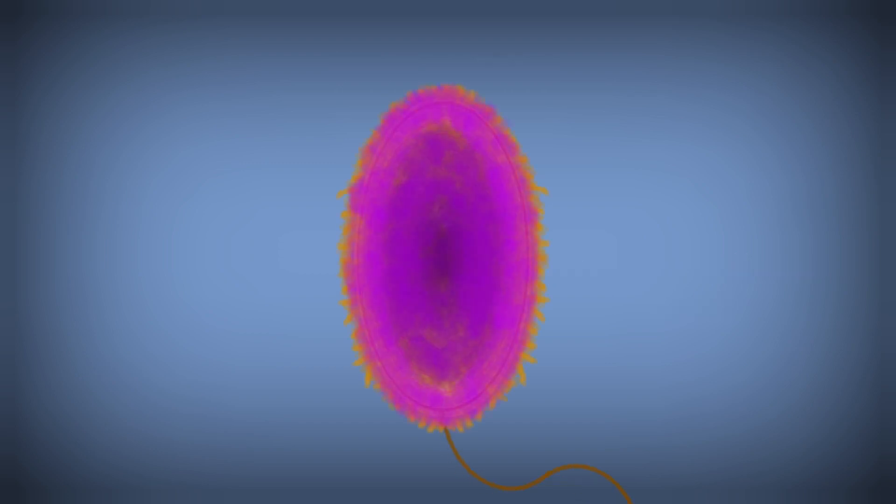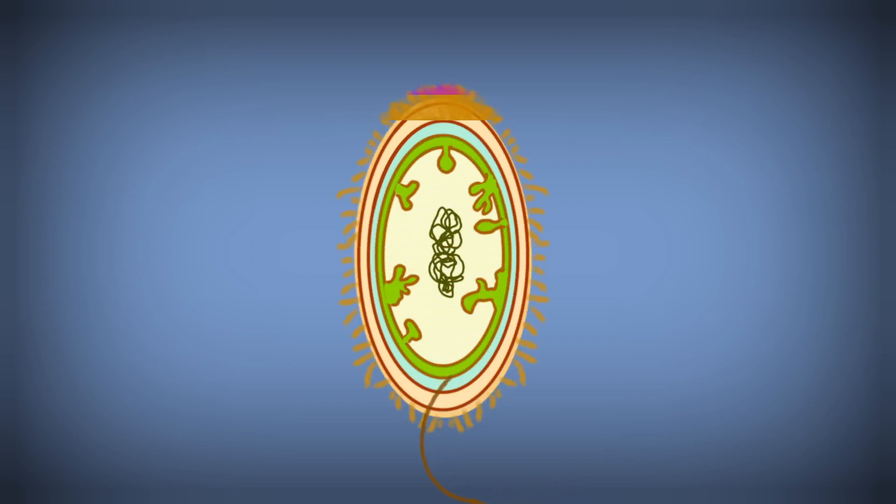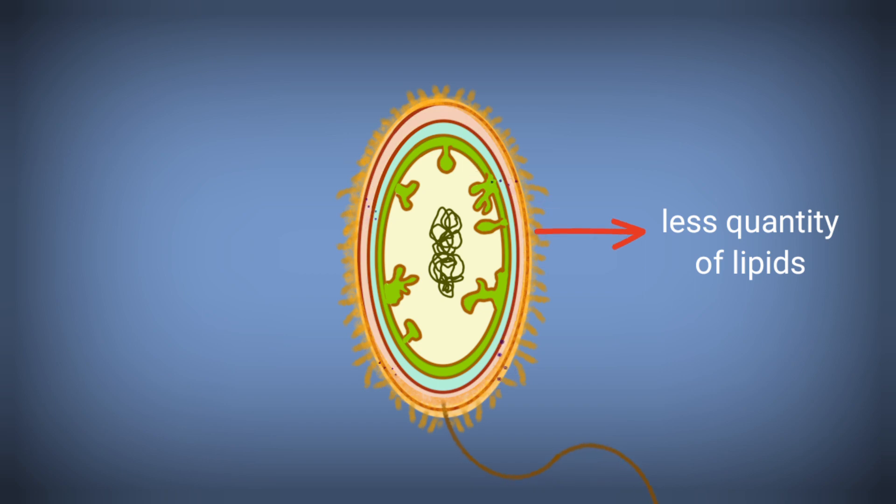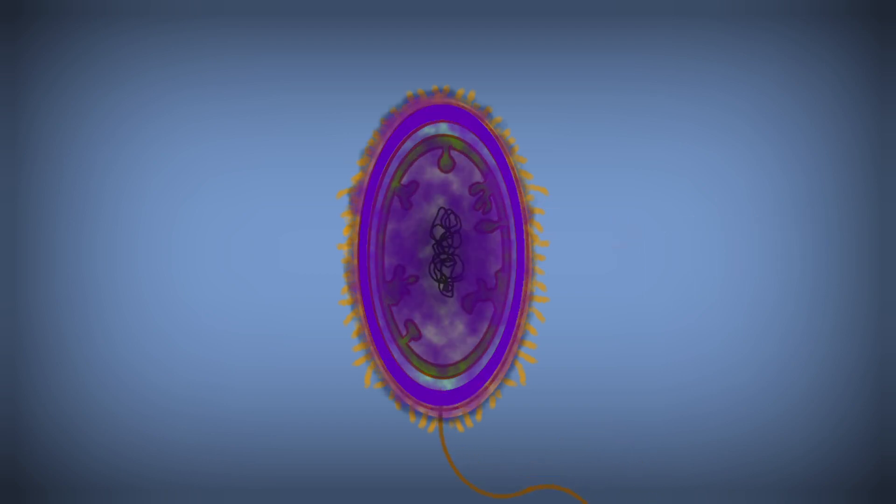Gram-positive bacteria easily show violet color because their cell wall is single-layered and contains less quantity of lipids. That's why they can easily absorb crystal violet.